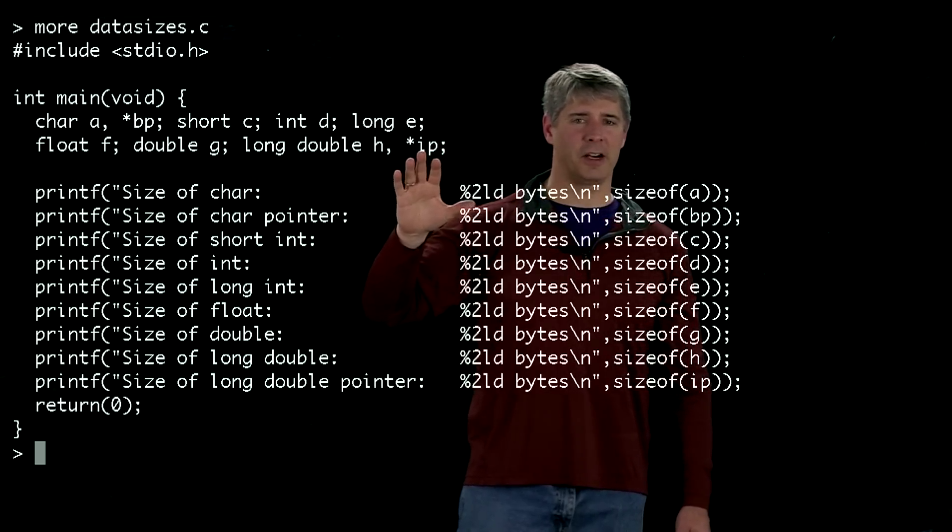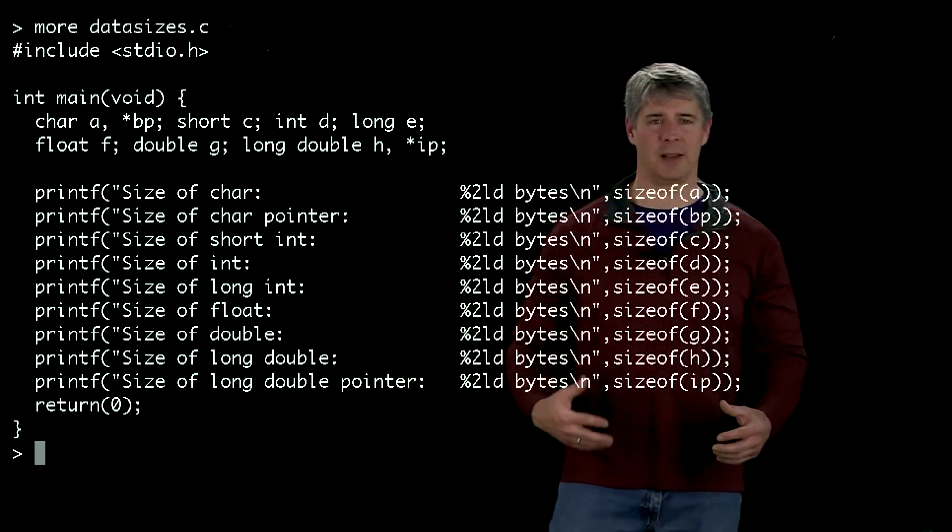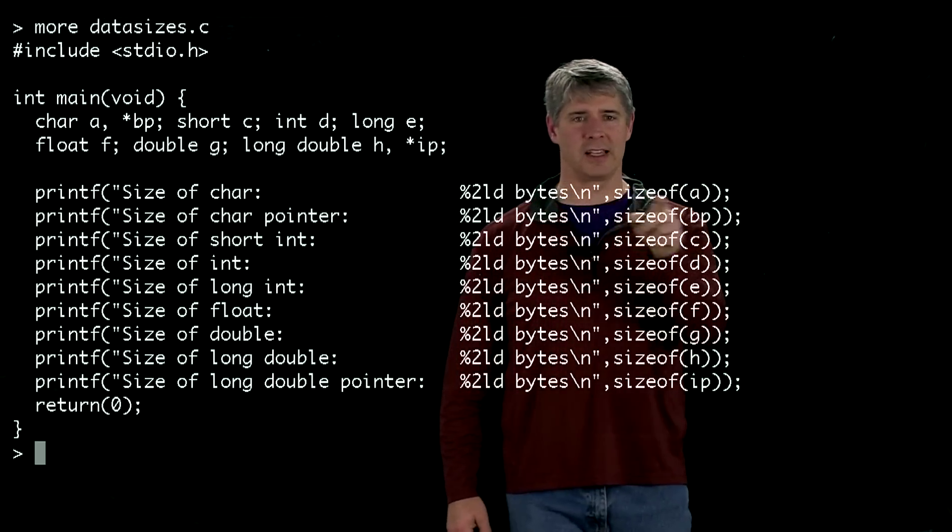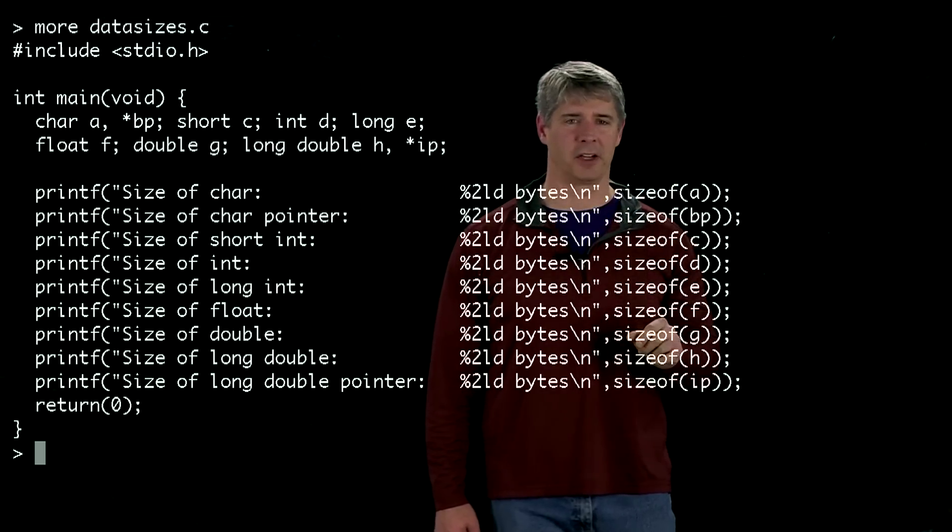After defining all these variables, all we do is print out the size of each of these data types using the standard function sizeof. It takes an argument there and reports back the number of bytes in the representation of that argument.